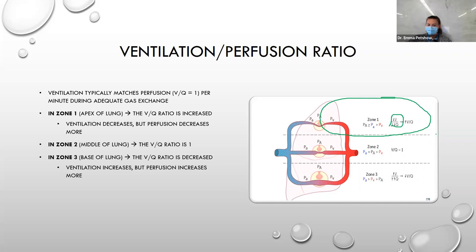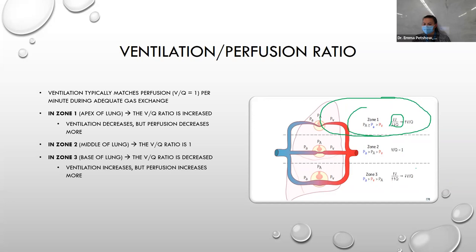Knowing V/Q zones may come up with immune conditions of the lung or COPD, or as a direct V/Q ratio question. Key points: in zone 1, both V and Q are low but Q drops more, raising ratio; in zone 3, both are high but Q rises more, lowering ratio; zone 2 equals one. Perfusion increases more in zone 3; ventilation decreases less in zone 1.